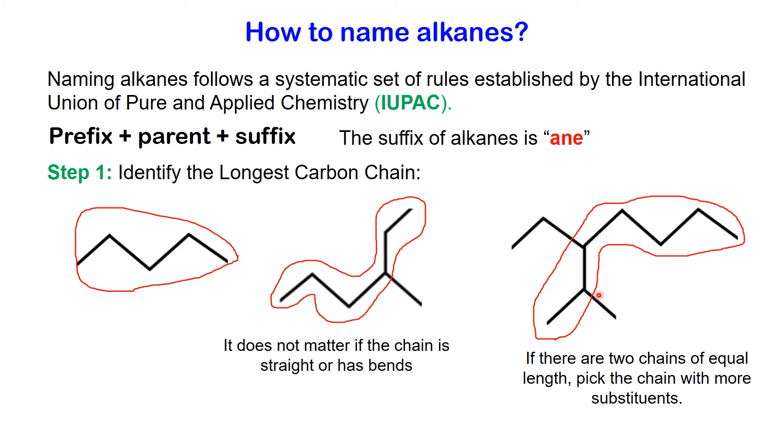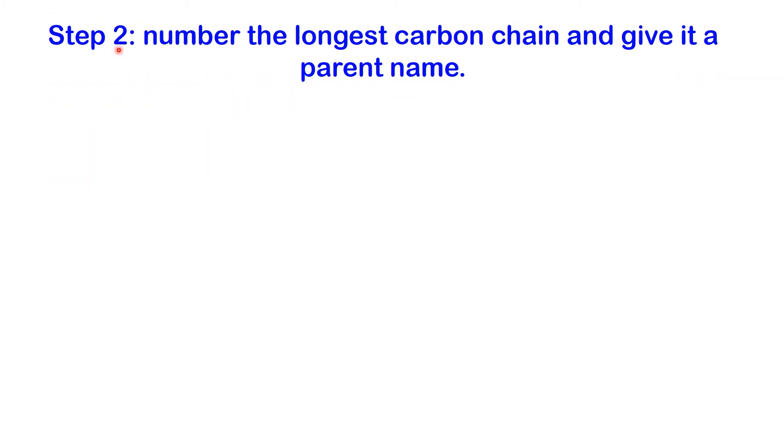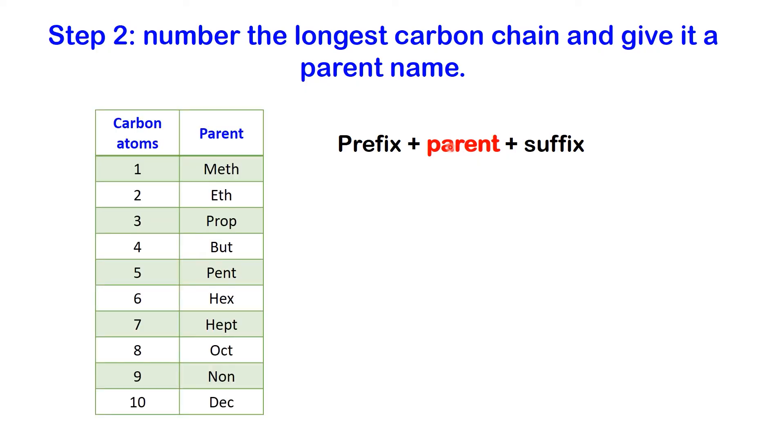Step two: number the longest carbon chain and give it a parent name. So we start building any systematic name with the parent name, which comes from the longest carbon chain in the molecule. The following table illustrates parent names corresponding to various lengths of carbon chains. Meth means one carbon atom, eth means two carbon atoms, and prop means three carbon atoms, and so on.